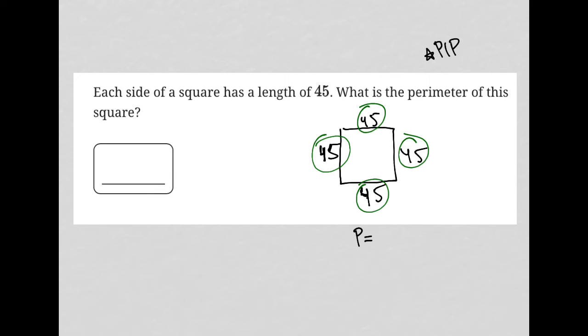As a shortcut, I'm going to call this 45 times 4, since there are four sides and each of those sides is 45. In my calculator, multiplying 45 times 4, I get 180, and therefore the correct answer is 180.